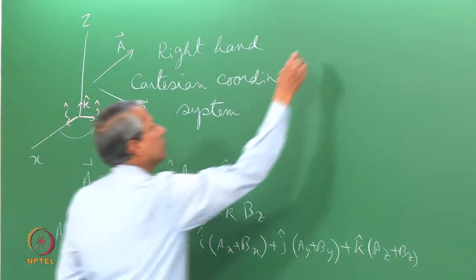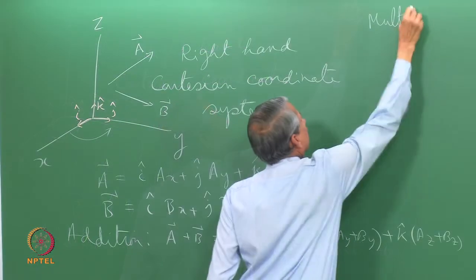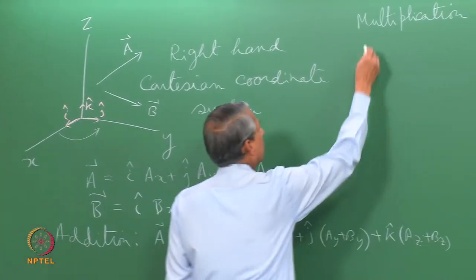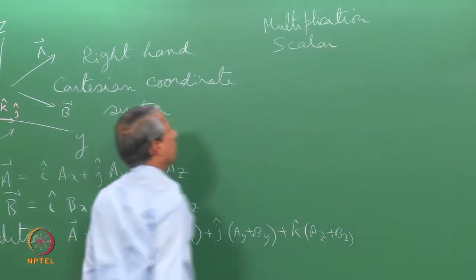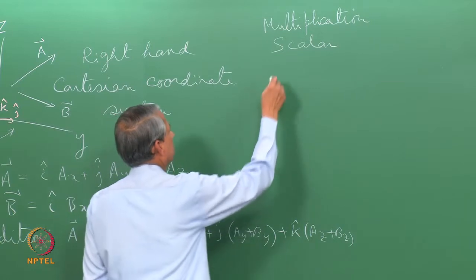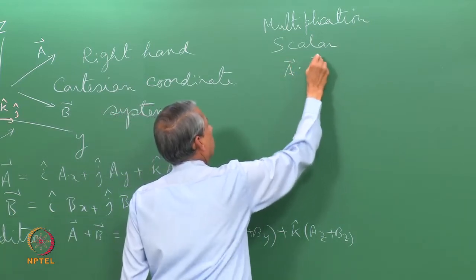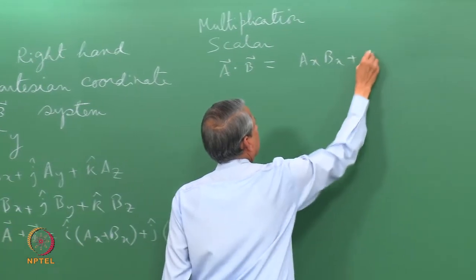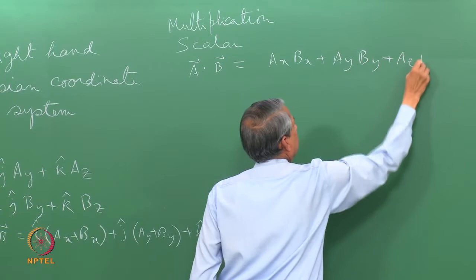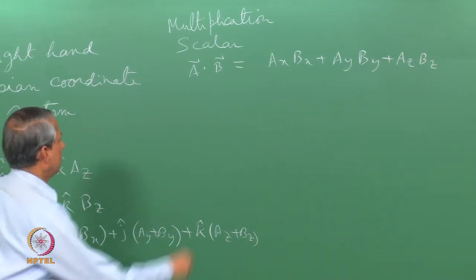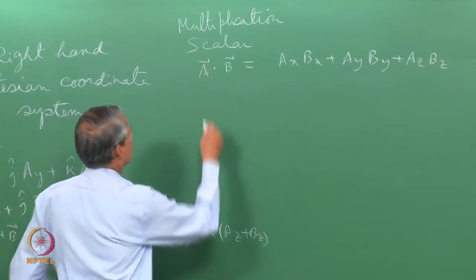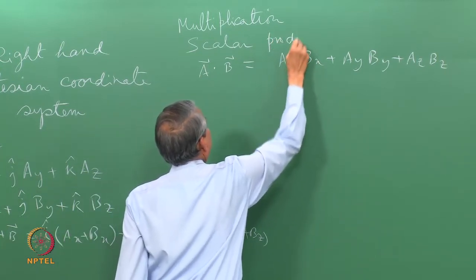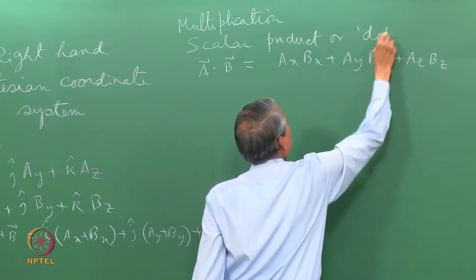Vector multiplication is defined in two ways. One is called scalar multiplication, where the resultant is a scalar quantity. We write it as A·B, defined to be ax·bx + ay·by + az·bz. We call it the dot product because we use a dot symbol to write it, so it is also called the scalar product or dot product.